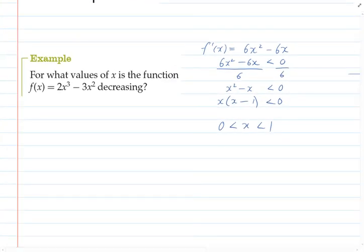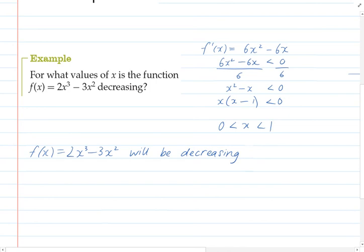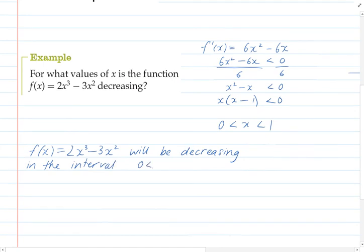And so we can say that between zero and one our graph is going to be decreasing. And so we'll write an answer as a sentence as well. So our function f(x) will be decreasing in the interval zero through to one.